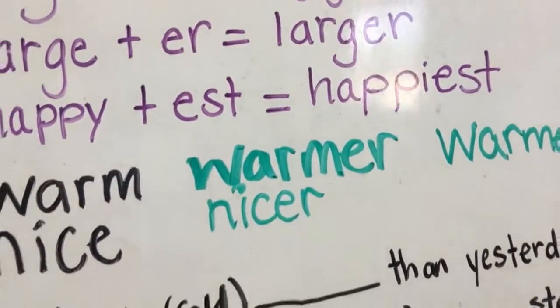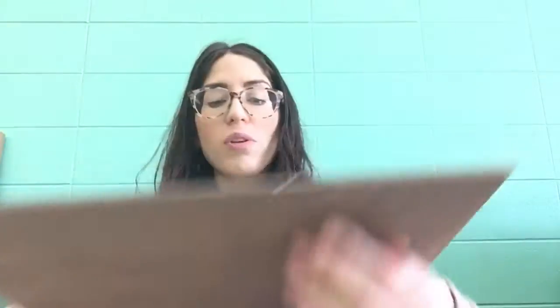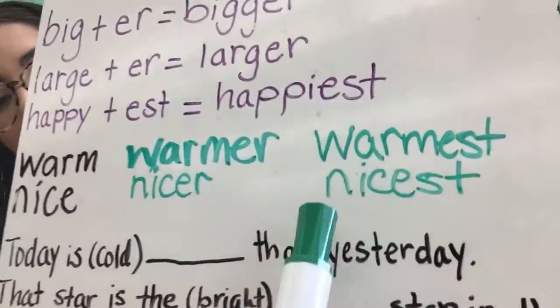The next one says 'nice.' Nice plus -er equals — write that down. We have nicer, N-I-C-E-R. Don't forget, you're going to drop that silent E and then add the suffix -er. We don't want N-I-C-E-E-R with two E's. Then for -est, nice plus -est equals nicest, N-I-C-E-S-T.